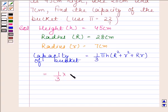We have 1 by 3 into 22 by 7 into 45 into 28 square plus 7 square plus 28 into 7.